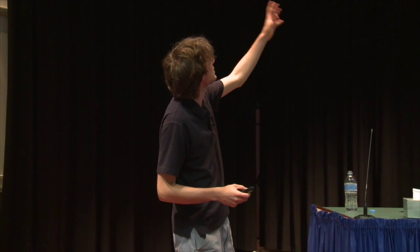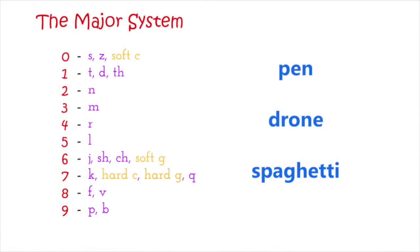You also have to be able to convert back from words to numbers — which is actually easier. If you have a word, ignore all vowels, W, Y, and H, look at the consonant sounds remaining, and convert them using the table. For example, 'pen' gives you P=9 and N=2, so 92. 'Drone' gives D=1, R=4, N=2, so 142.